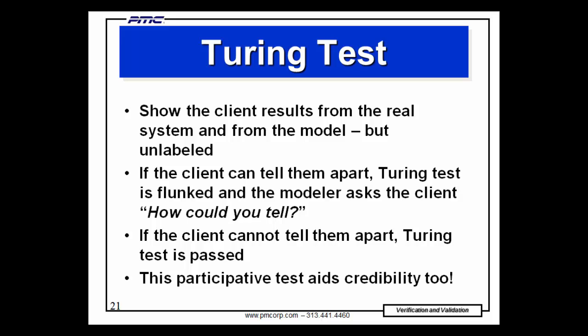What is a Turing test? You get results from the model and a printed report from the real system, take the labels off, and ask the client which is the model and which is the system. If the client says one must be the model because the real system always has a much bigger backup there, your Turing test just failed — and you find out why your model has a shorter queue than the real system. If the client cannot tell them apart, the Turing test is passed and the model gains credibility. This test is named after brilliant British mathematician Alan Turing, who helped win the Battle of Britain in World War II.